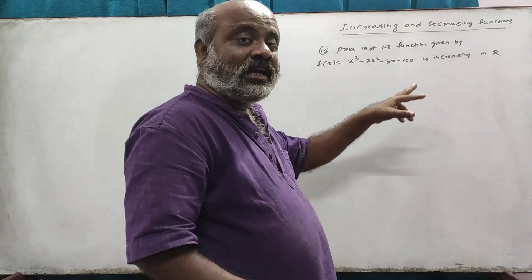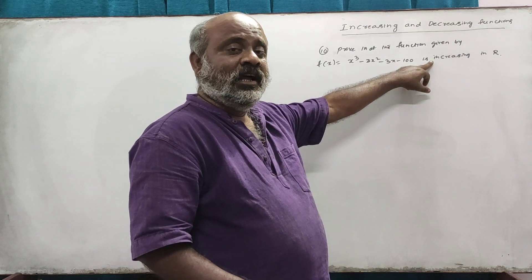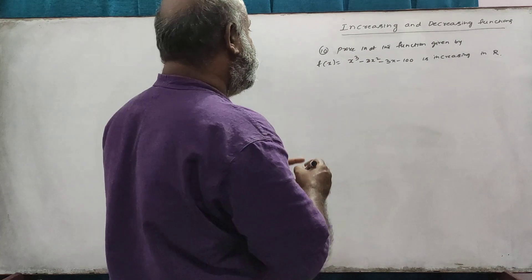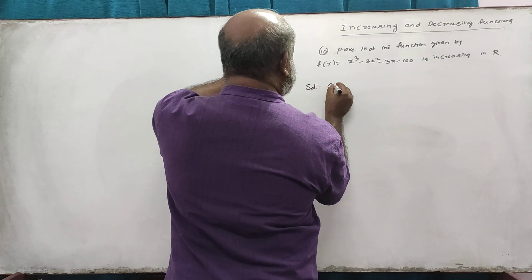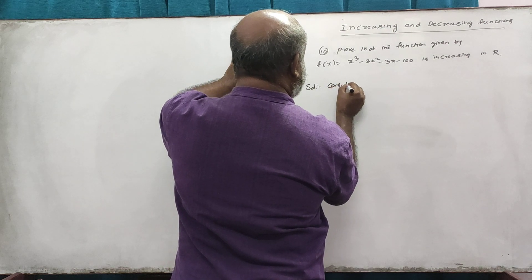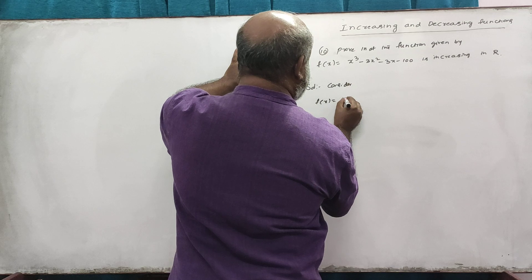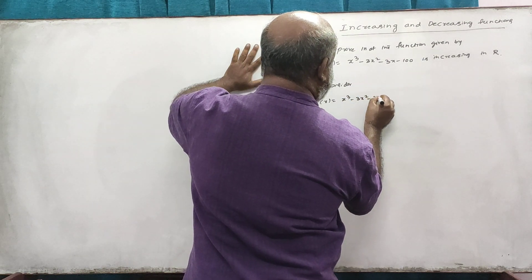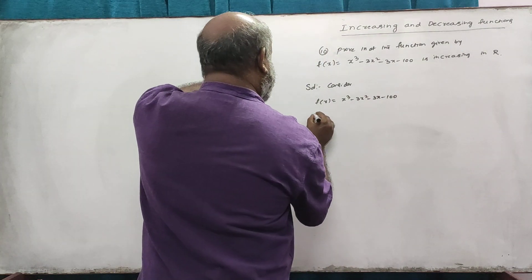Now, if you are strictly increasing or strictly decreasing, then you are going to be very increasing in r and pro-moder. The solution is: consider f of x is equal to x cubed minus 3x squared minus 3x minus 100.